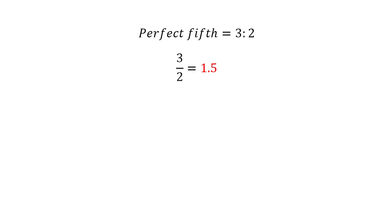The perfect fifth is a ratio of 3 to 2, or 3 divided by 2, which equals 1.5. So if the frequency of C4 is multiplied by 1.5, we get the frequency of its perfect fifth, which is G4 in just intonation.